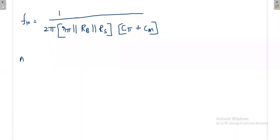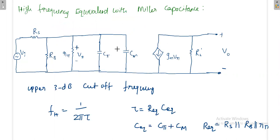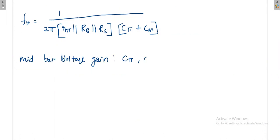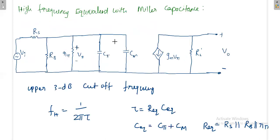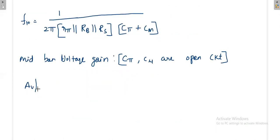Now consider the mid-band voltage gain. At mid-band frequencies, Cpi and Cmu behave like open circuits, so their effect is removed from the circuit. After removing Cpi and CM, the voltage gain is generally Vout/Vi. In general, the voltage gain equals gm·RL'.